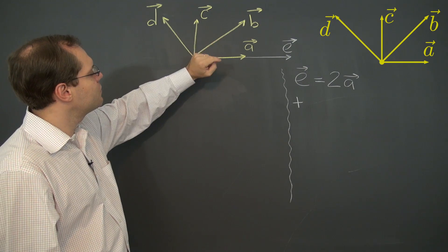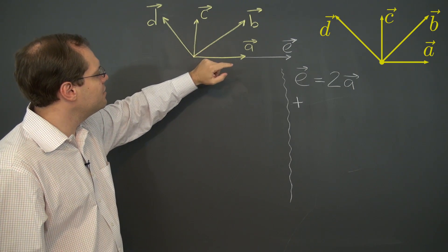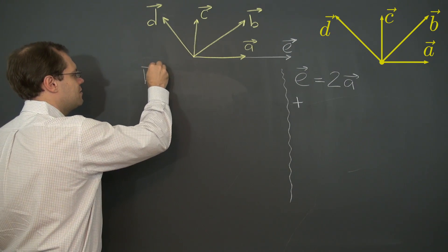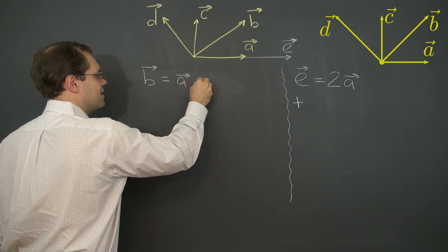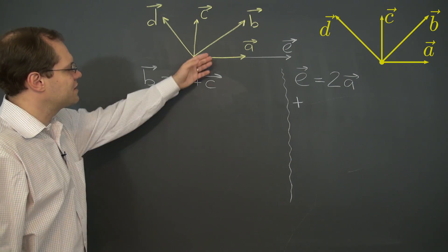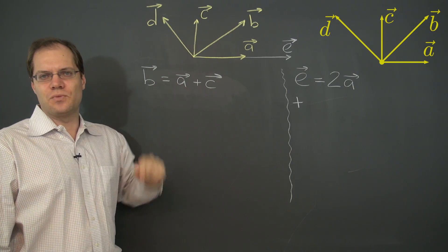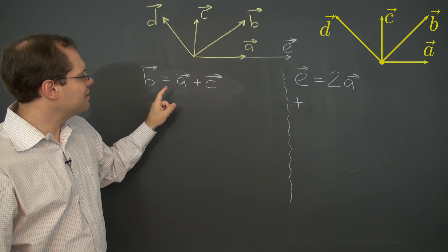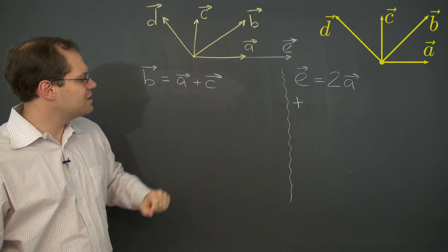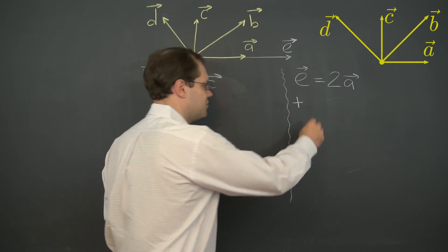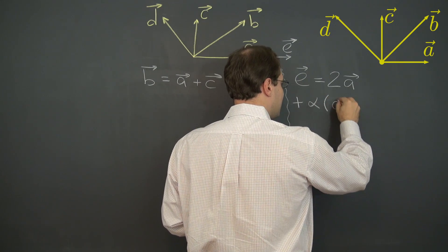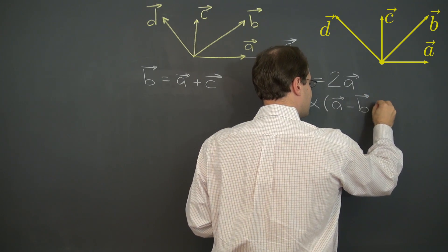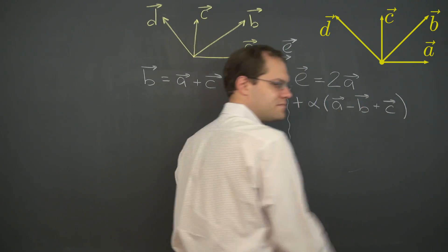And they come from the following observations. The first one is that B is the sum of A and C. That's certainly true. So B is the sum of A and C. The vectors A, B, C, and D are linearly dependent. Here is one proof of it. That means that, let's put it in alphabetical order. A minus B plus C is zero, and it's a non-trivial zero. So, we do plus alpha A minus B plus C.